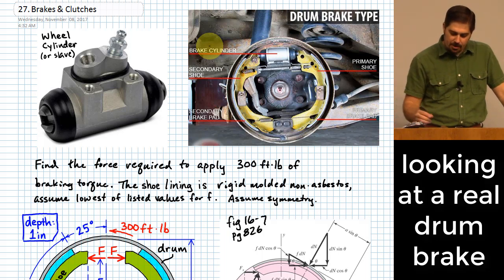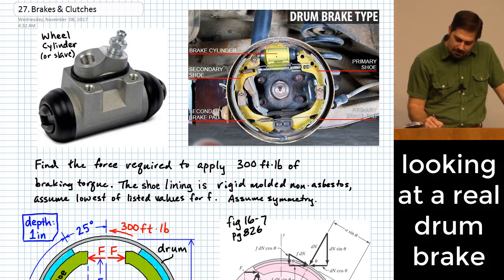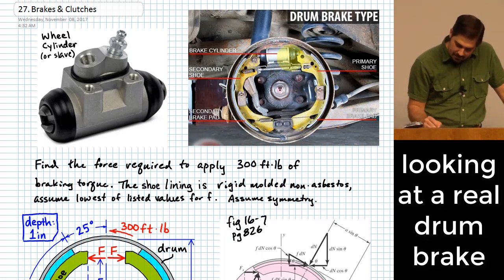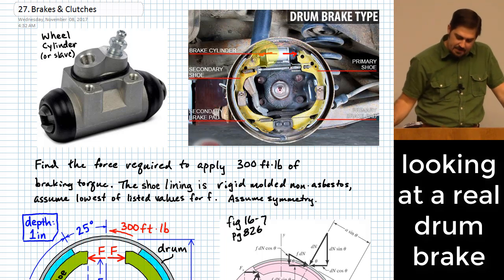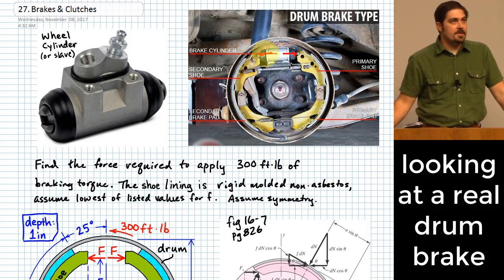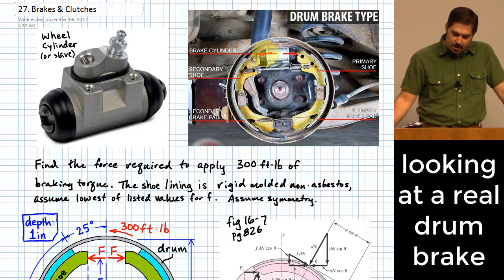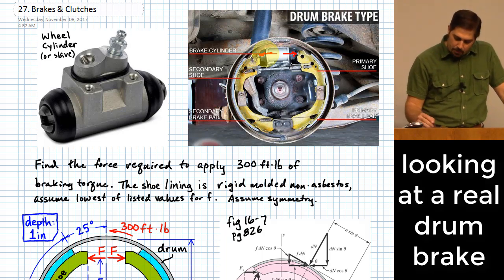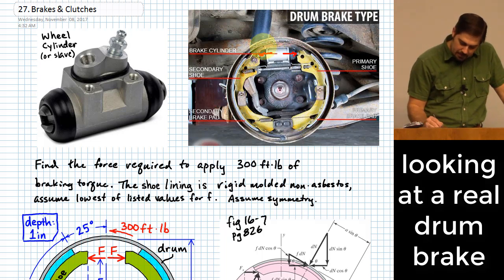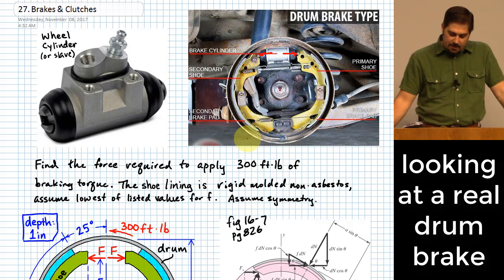Those are all synonymous terms. That pressure goes into the cylinder and then pushes these pistons — there's a piston that pushes this way and another piston that pushes this way inside that single cylinder, due to brake fluid pressure. As it does that, it pushes these shoes into the inside surface of the drum.